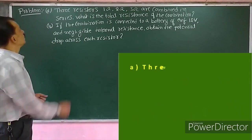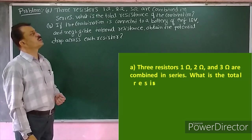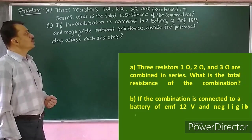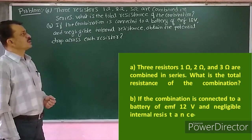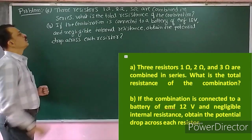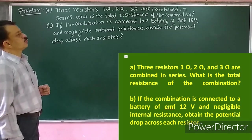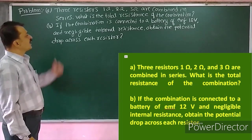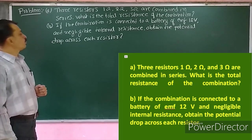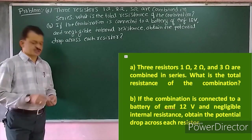Next problem: three resistors — 1 ohm, 2 ohm, 3 ohm — are combined in series. What is the total resistance of the combination? Part B: if the combination is connected to a battery of EMF 12 volts and negligible internal resistance, obtain the potential drop across each resistor.